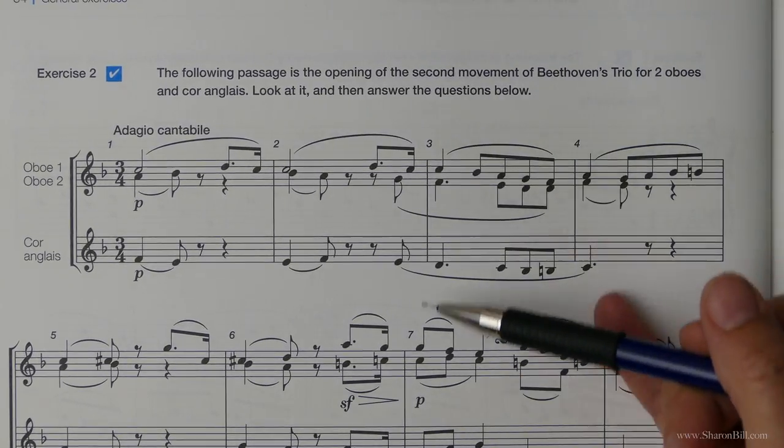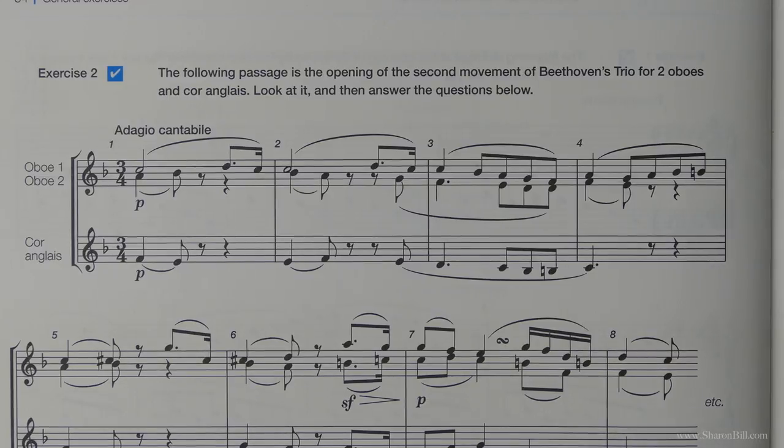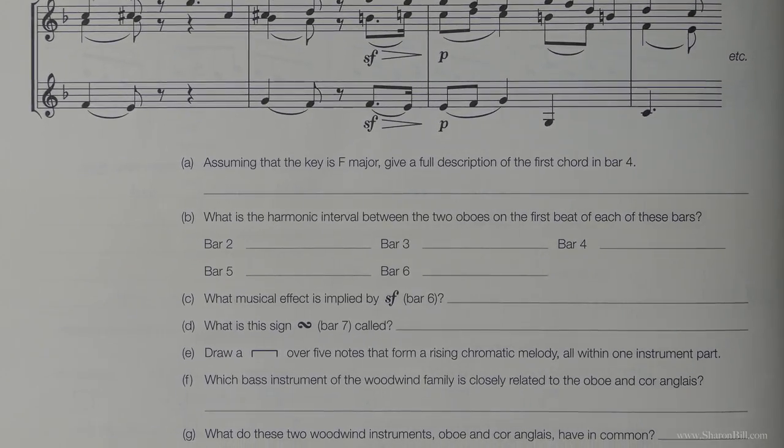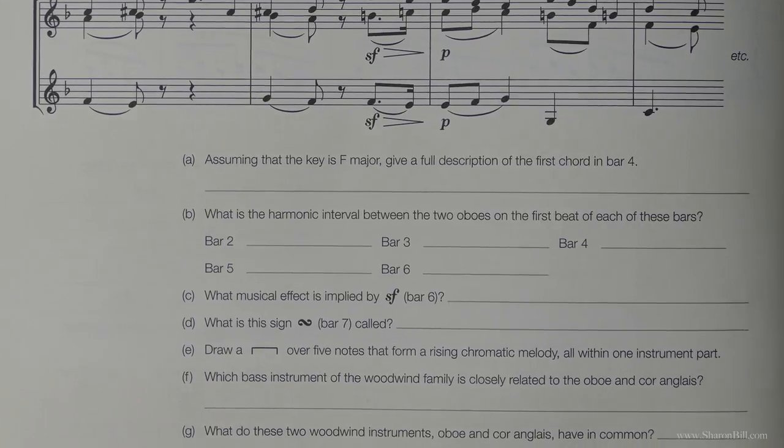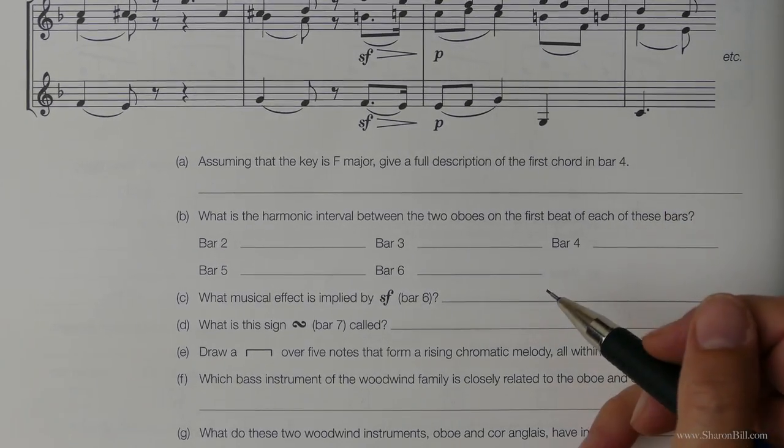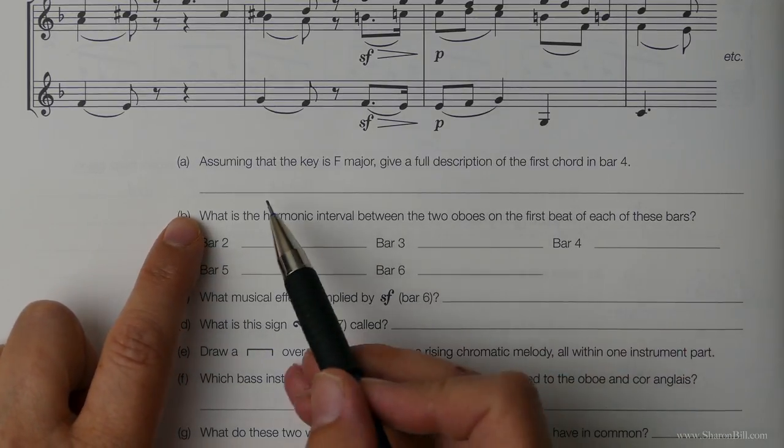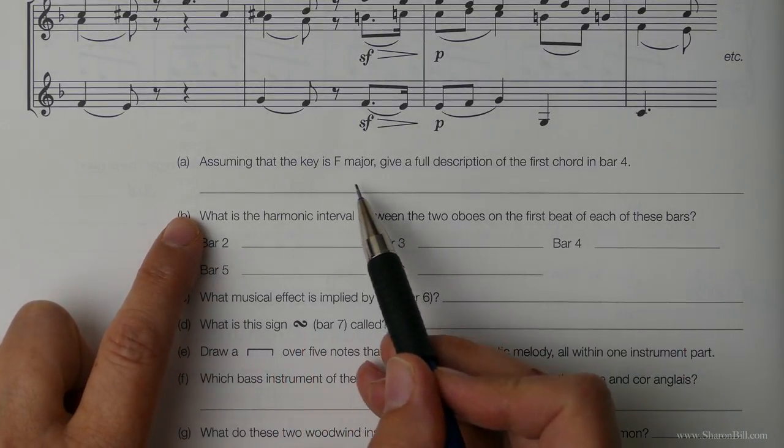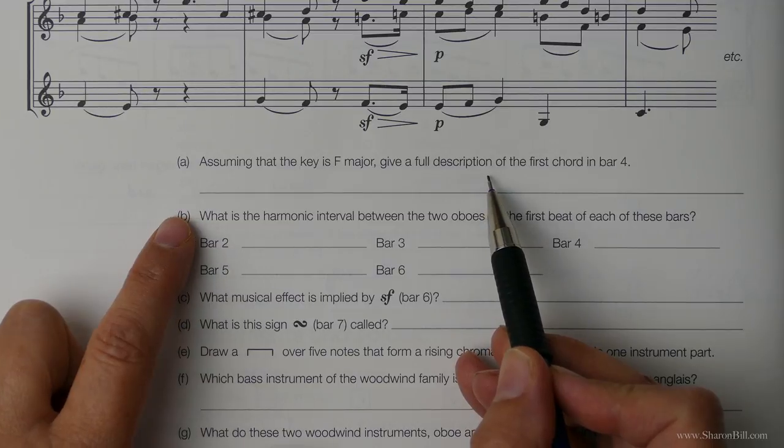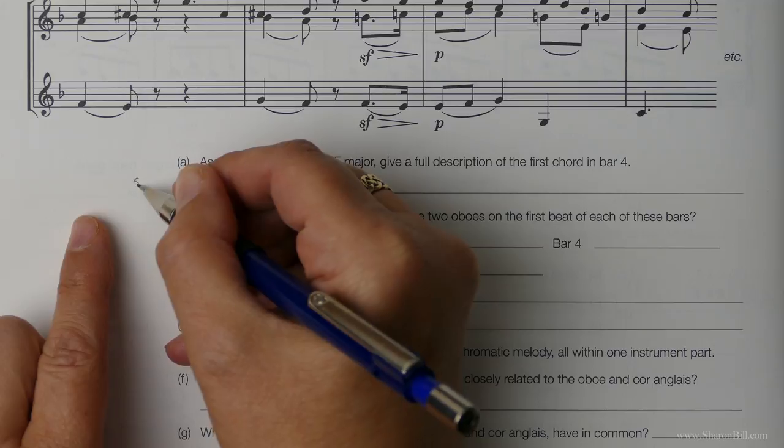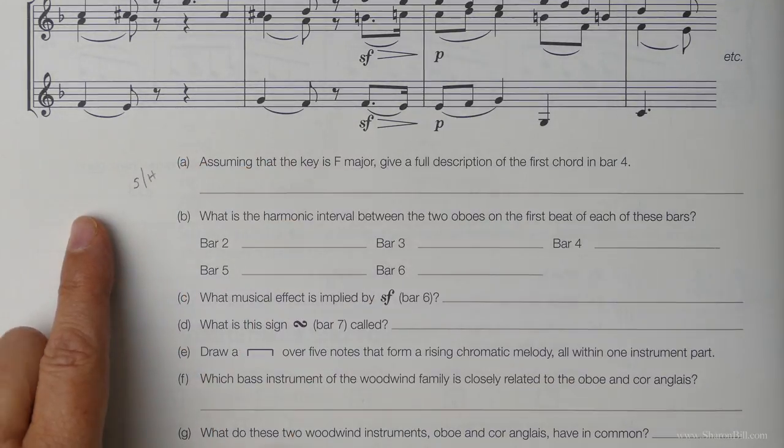And so all of the questions refer to this little piece of music here. And we're going to have a look at these questions. So I'm going to tell you where to look back over the previous grades to find the answers for these should you need to look it up. So we're asked to give a full description of the first chord in bar 4 and you'll find out the answer to help you to do that in grade 5 section H.